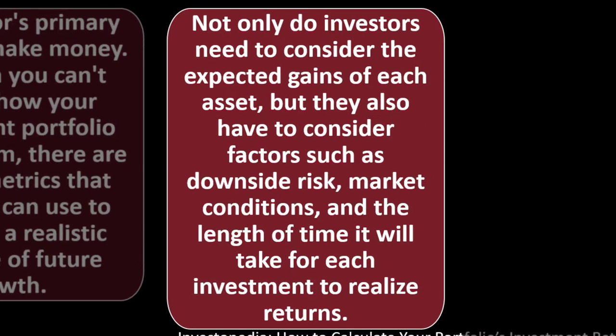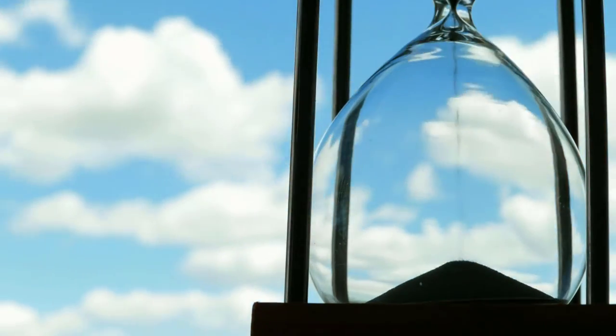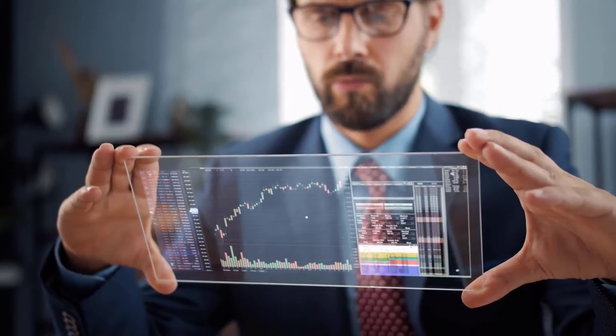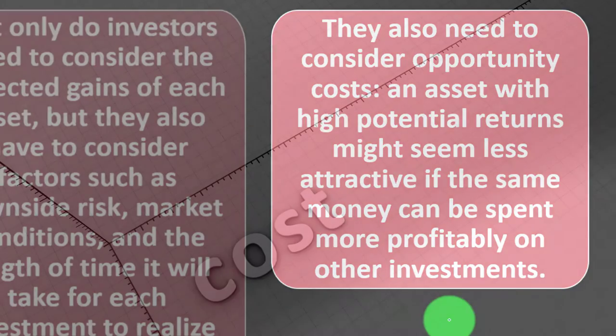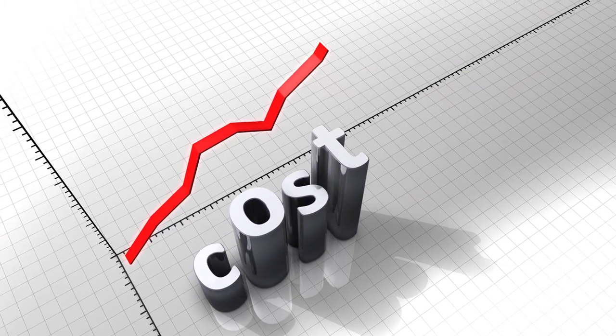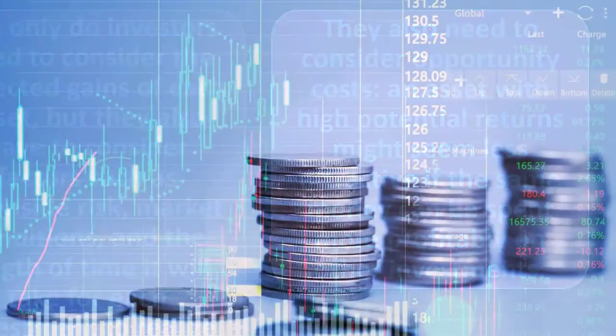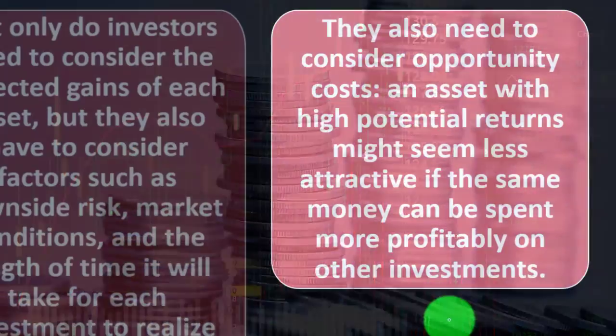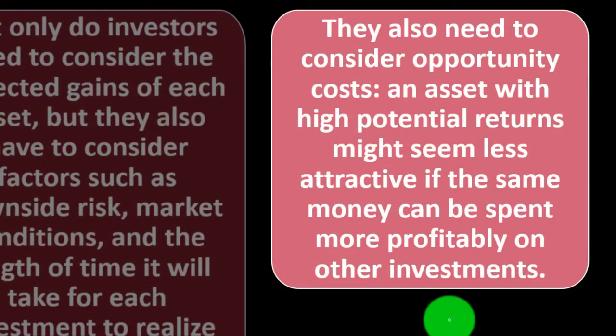Not only do investors need to consider the expected gains of each asset, but they also have to consider factors such as downside risk, market conditions, and the length of time it will take for each investment to realize returns. We've got to think about our time horizon and what risk will be involved. They also need to consider opportunity costs. Opportunity costs are the costs of the next best thing that we could do. Anything you put your money into means that you chose not to put your money in the next best thing.